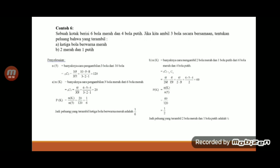Terus untuk yang B, banyaknya cara pengambilan 2 bola merah dan 1 bola putih dari 6 bola merah dan 4 bola putih. Berarti kombinasi 6,2 dikali kombinasi 4,1. Disini diperoleh jawabannya adalah 60. Sehingga untuk peluang terambilnya 2 bola merah dan 1 bola putih sama dengan ruang kejadian dibagi ruang sampel, berarti 60 dibagi 120, ketemu setengah.